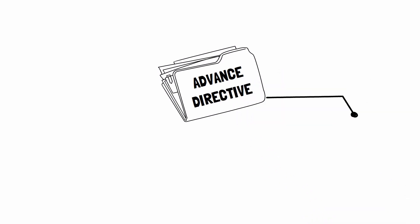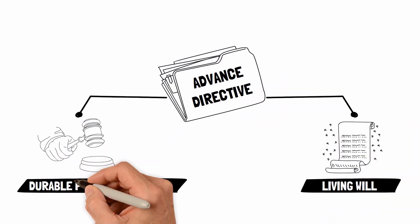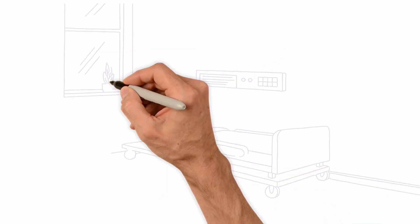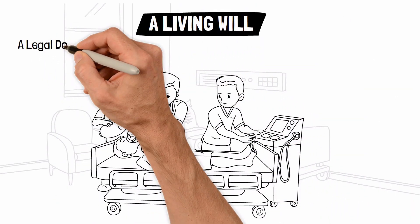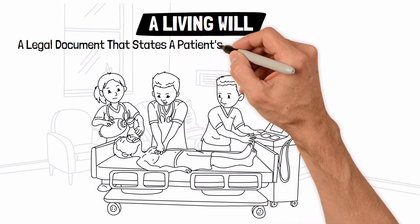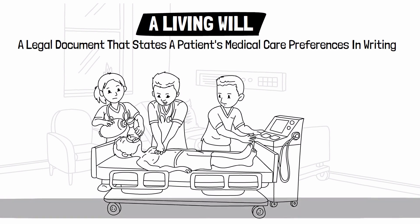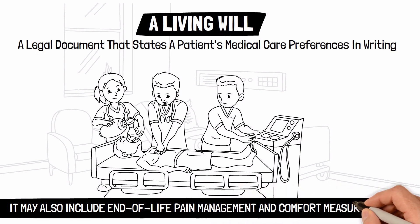The two types of advance directives are: 1. Living Will, and 2. Durable Power of Attorney. A living will is a legal document that states a patient's medical care preferences in writing. This includes which life-saving measures they wish to receive, such as CPR and/or intubation and mechanical ventilation. It may also include end-of-life pain management and comfort measures as well.